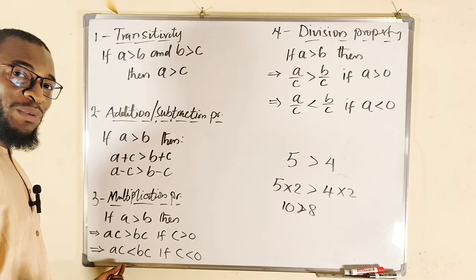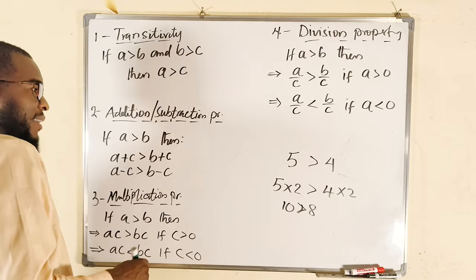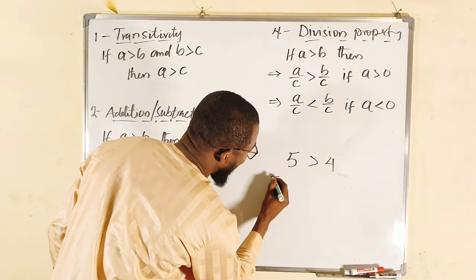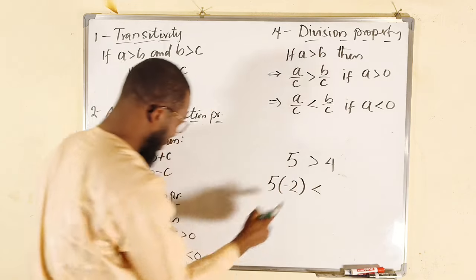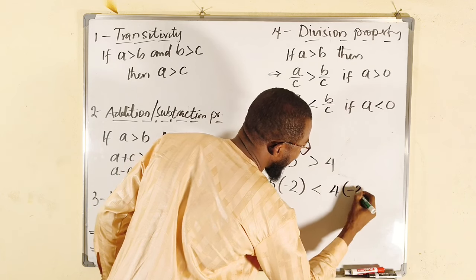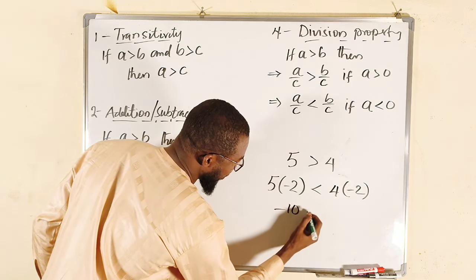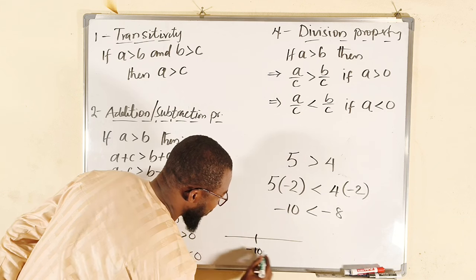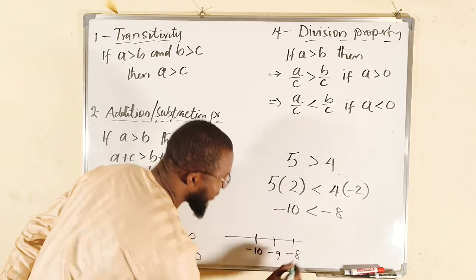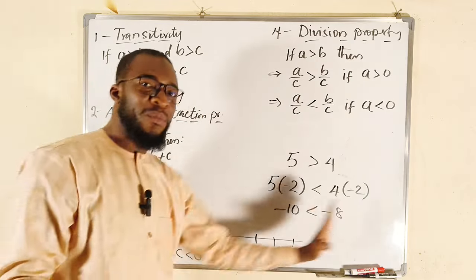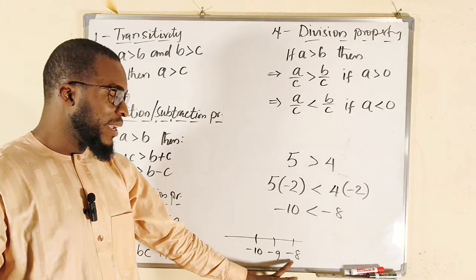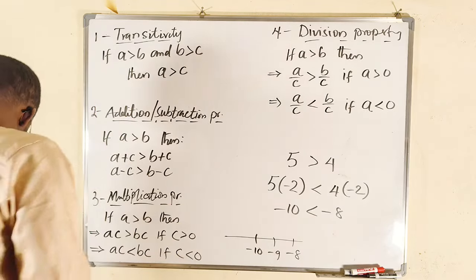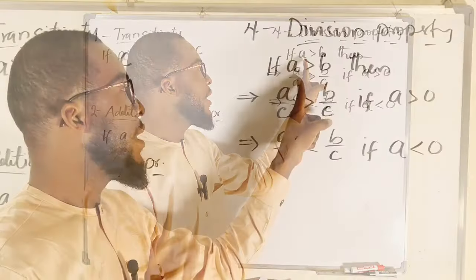However, if c is negative, then ac must be less than bc. For example, 5 multiplied by negative 2 gives negative 10, and 4 multiplied by negative 2 gives negative 8. Is negative 10 less than negative 8? Yes, because on the number line, numbers to the left are always less than numbers to the right, and negative 10 is to the left of negative 8.